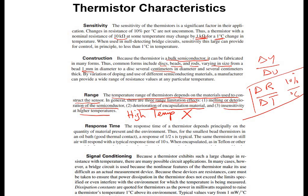The response time of the thermistor principally depends on the quantity of material present in the environment. For the smallest bead thermistor in an oil bath with good thermal contact, a response of 0.5 seconds is typical. The same thermistor in still air will respond with a typical response time of 10 seconds. So direct contact takes 0.5 s, while measuring temperature in air takes about 10 s.